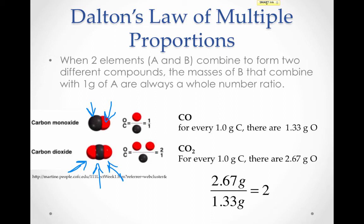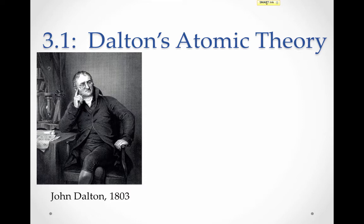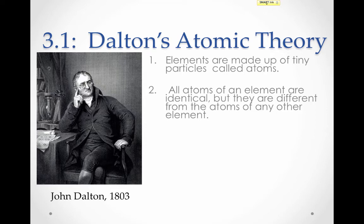In 1803, John Dalton took all of these observations and put them together to constitute his atomic theory. Atomic theory has a couple of points. We'll list them here. First, elements are made up of tiny particles called atoms. This is something we've talked a lot about in class. Second, all atoms of an element are identical, but they are different from the atoms of any other element. In other words, every hydrogen atom is like every other hydrogen atom, but every hydrogen atom is different from every oxygen atom.